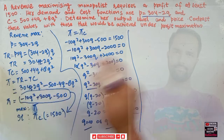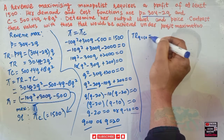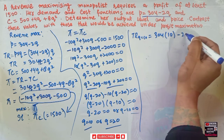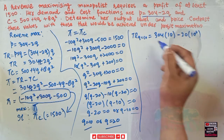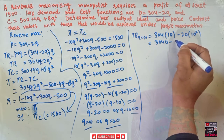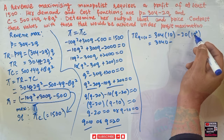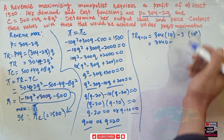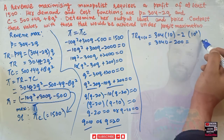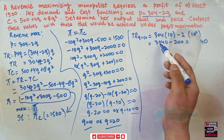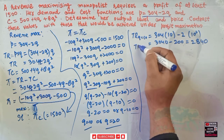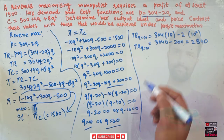When q = 10: TR = 304(10) − 2(10²) = 3040 − 200 = 2840. So total revenue when q = 10 is $2,840.